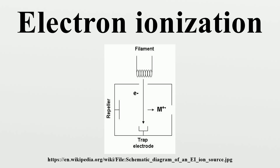Principle of Operation: The following gas phase reaction describes the electron ionization process, where M is the analyte molecule being ionized, e- is the electron, and M+ is the resulting ion.